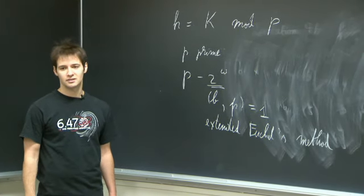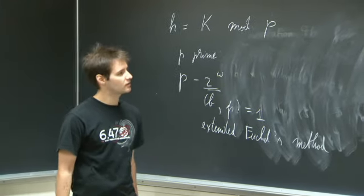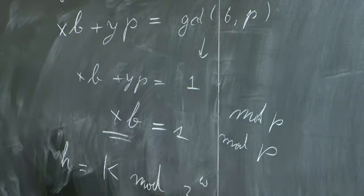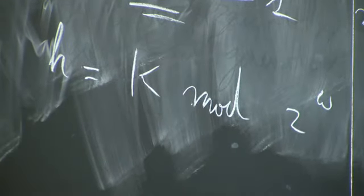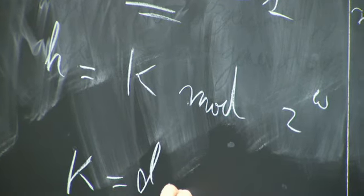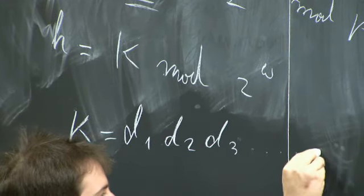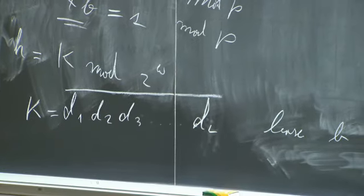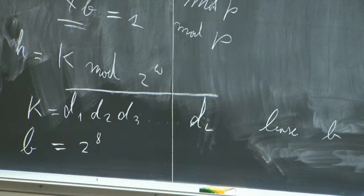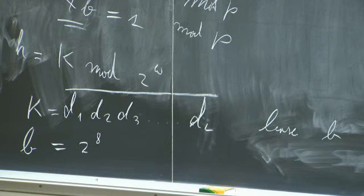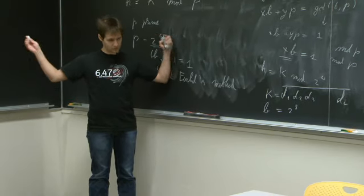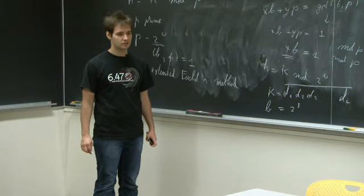But that doesn't tell me why we're not using this. The multiplicative inverse would work, but there's something else that's wrong with using 2 to the w. Will this give a good hash function? Let's say h equals key mod 2 to the w. The key is some digits in base b — it's a big number made out of digits in base b: d1, d2, d3, all the way up to d_length in base b.